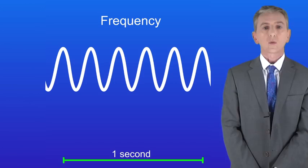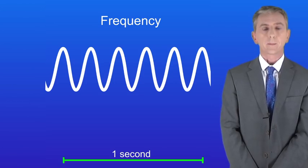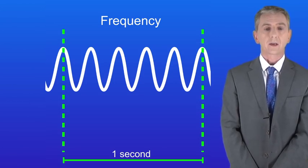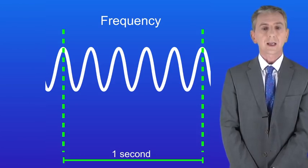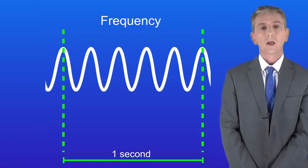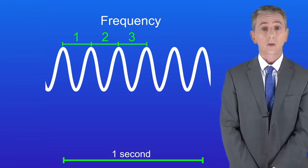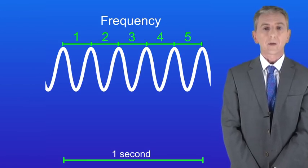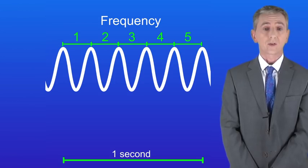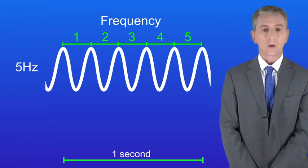Here's a transverse wave with the time shown on the bottom. You can see that this represents one second. To work out the frequency we need to count the total number of waves. We can count one, two, three, four and five waves. So that means that the frequency is five waves per second. In other words five Hertz.